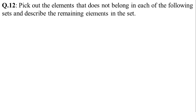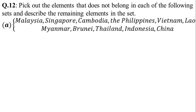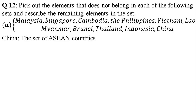In question number 12, pick out the element that does not belong in each of the following sets and describe the remaining elements. We choose the well-defined and distinct elements. In the first part, the set contains Malaysia, Singapore, and different country names — these are all Asian countries. But China is also an Asian country, so it belongs. The remaining countries are European countries. China is the separate element — China is an Asian country and the answer for this set.